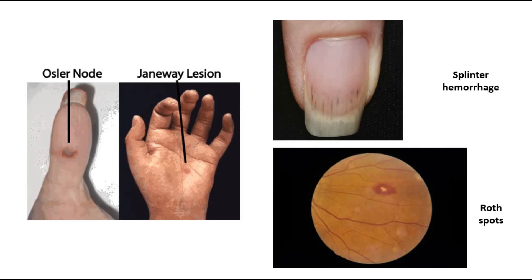Here are some pictures. Looking at the first picture, which is the Osler node — Osler nodes are painful. They are painful pulp infarcts in the fingers or toes. Whereas Janeway lesions are painless palmar or plantar macules. These two look similar, but one is painful and one is not. To remember: Osler node starts with an O, so O for ouch — Osler nodes are painful, whereas Janeway lesions are not painful.